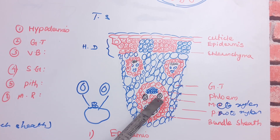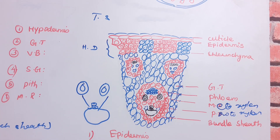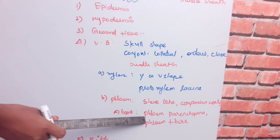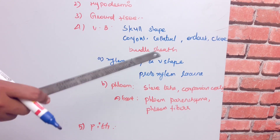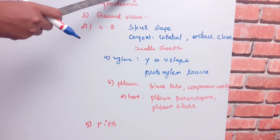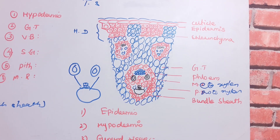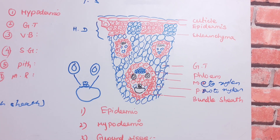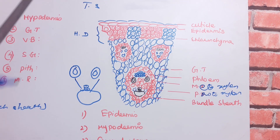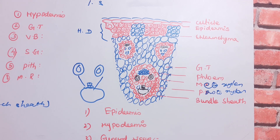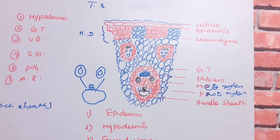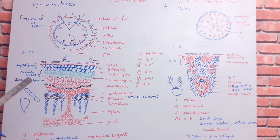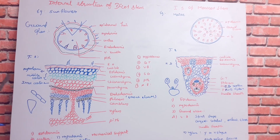The phloem is present and consists of sieve tubes and companion cells, along with parenchyma and phloem fibers. The pith is largely absent in the monocot stem, or if present it is not well differentiated. This completes the description of the monocot stem. Now let's compare the dicot and monocot stems.